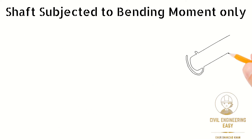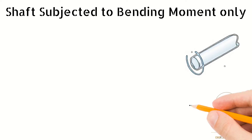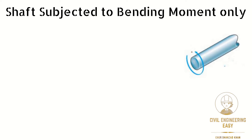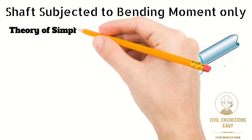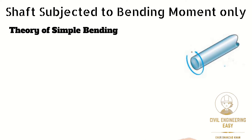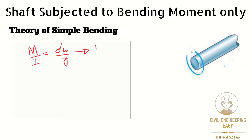Let's consider a shaft subjected to a bending moment only. When a shaft is subjected to a pure bending load, the principal stresses induced in the shaft are tension and compression. The maximum stress induced in the shaft is determined by the theory of simple bending.